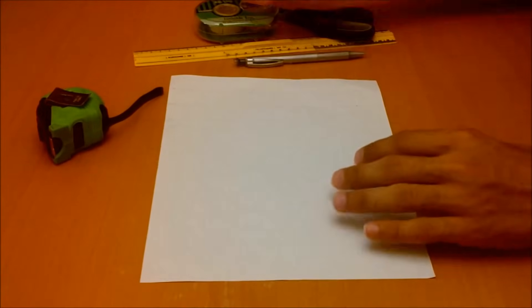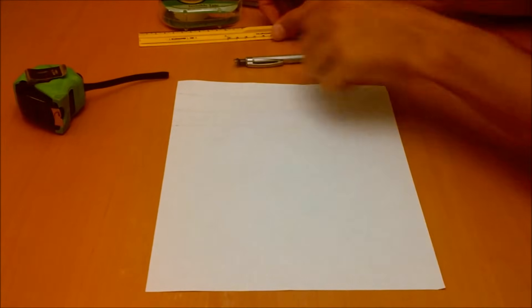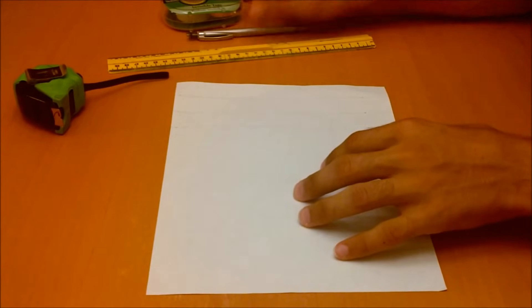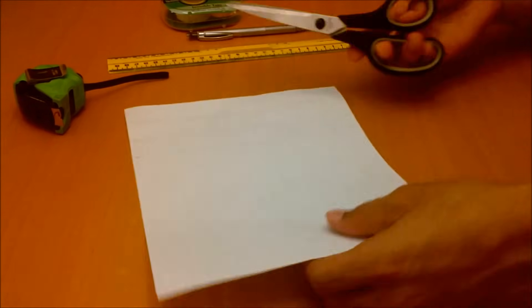First, you need to create three strips of paper by drawing three strips on your piece of paper with a ruler and pencil, as I've already done, and then cutting them out with scissors as shown here.